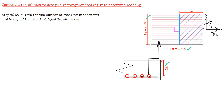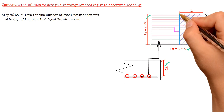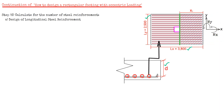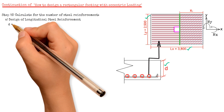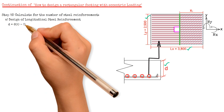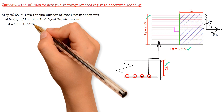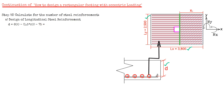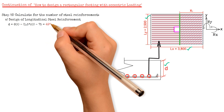To calculate for the effective depth d, cutting through this section, the effective depth d equals the thickness 600 mm, minus 1.5 times the diameter 20 mm, minus concrete cover 75 mm, giving us a value of 495 mm.